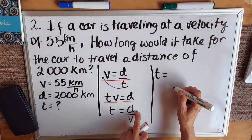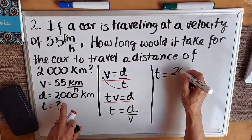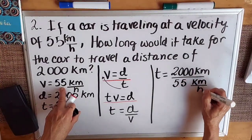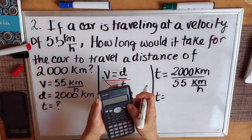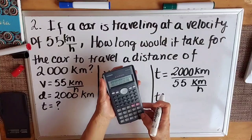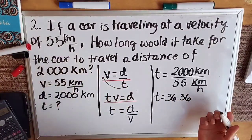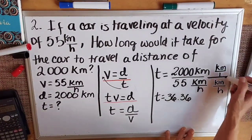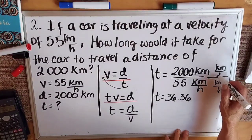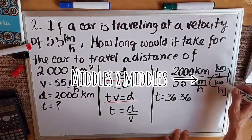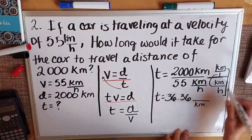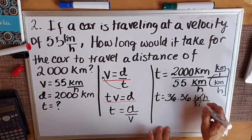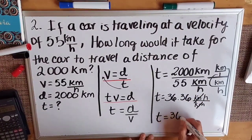Time is our unknown and now we make the substitution: time equals distance over velocity, so time equals 2,000 kilometers over 55 kilometers per hour. Using our calculator, 2,000 divided by 55 equals 36.36. For the units: we have kilometers over 1, divided by kilometers over hours. Multiplying middles by middles and extremes by extremes, the kilometer units cancel, and the result is 36.36 hours.